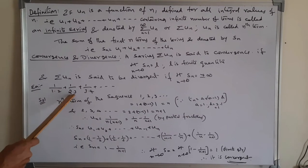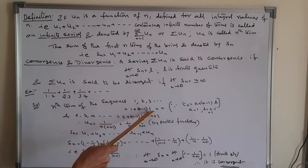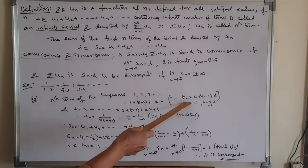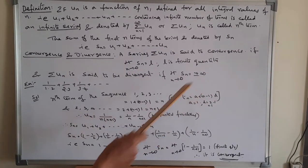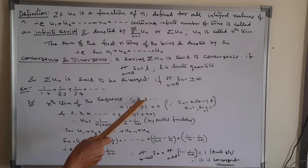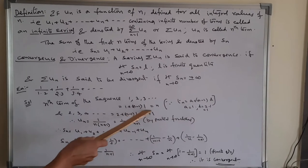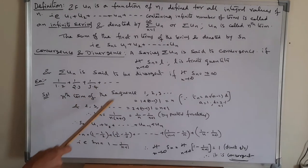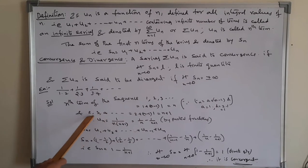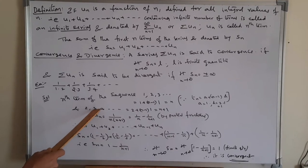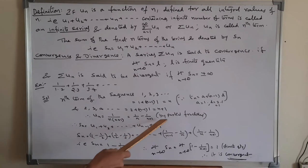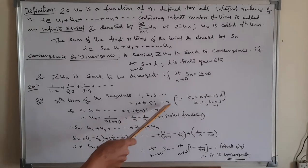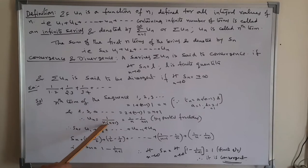The nth term of the sequence 1, 2, 3, ... is found using the arithmetic progression formula: Tn = a + (n−1)d. Here a equals 1, d equals 1, giving the first factor as n. For the second sequence 2, 3, 4, ..., a equals 2 and d equals 1, giving 2 + (n−1)×1 = n+1. Therefore un equals 1/(n(n+1)).